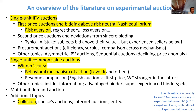The single-unit common value auction and the winner's curse will be discussed shortly. There are other topics within single-unit common value, like advantaged bidders and super-experienced bidders. Finally, more complex auctions include multi-demand auctions, multi-unit demand auctions, and additional topics like collusion, choice auctions, internet auctions, and entry. In Russia, e-auctions — public procurement run on internet platforms — are widely used.